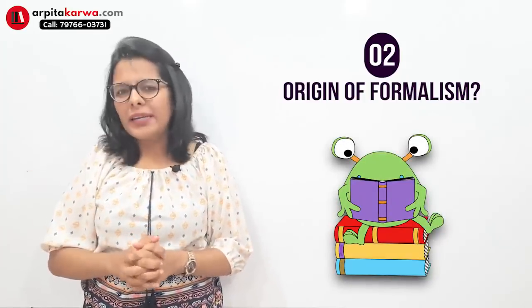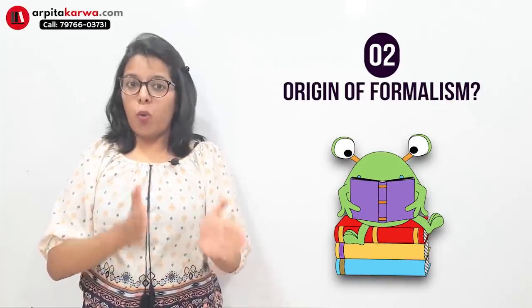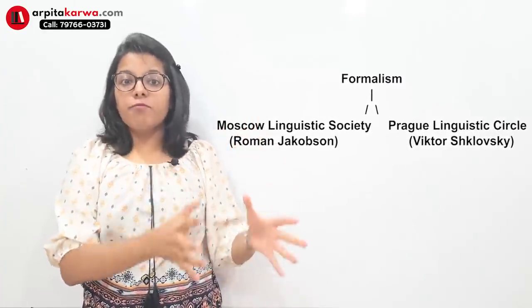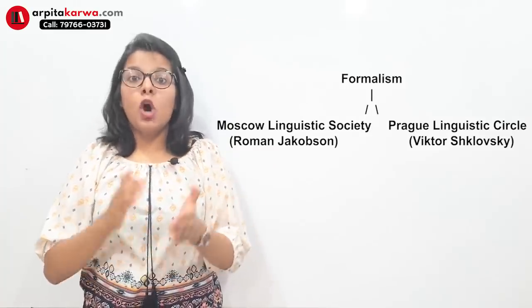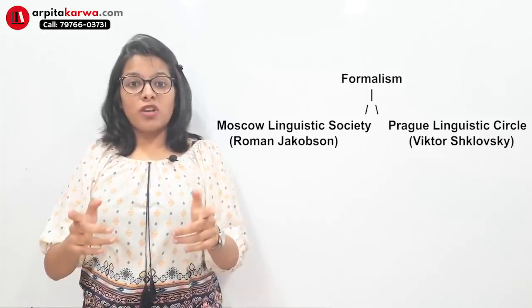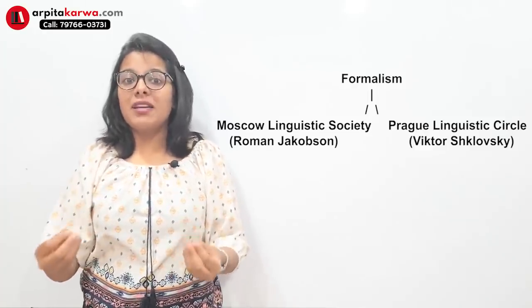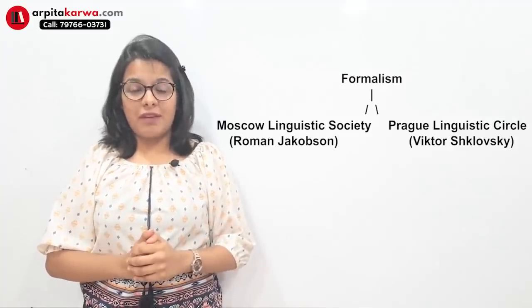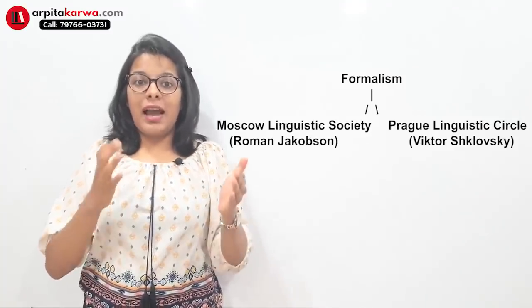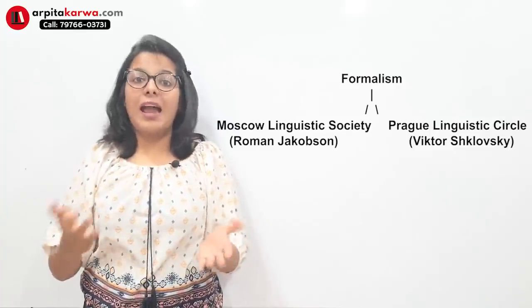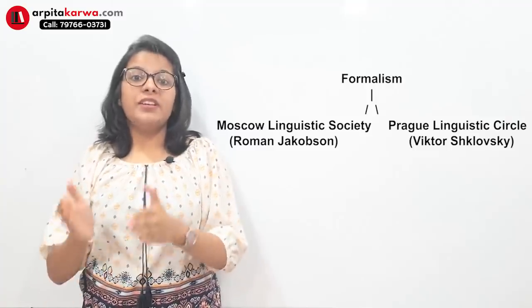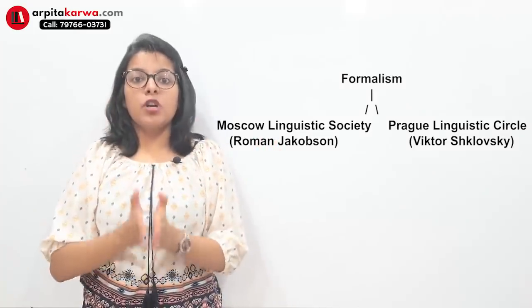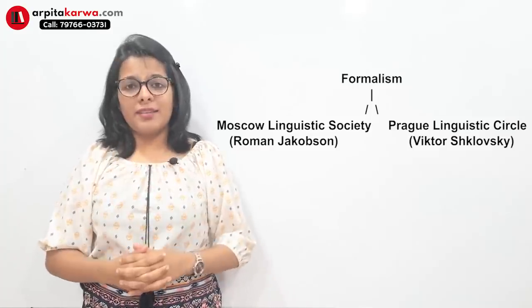In Russia there were two major groups. One was the Moscow Linguistic Society and the other was the Prague Linguistic Circle. The head of the Moscow Linguistic Society was Roman Jakobson — the famous man who said that the two fundamental structures of language are metaphor and metonymy. This was actually a question asked in the January 2017 NET exam: who said that the two structures of language are metaphor and metonymy? The other group, the Prague Linguistic Circle, was led by Viktor Shklovsky.